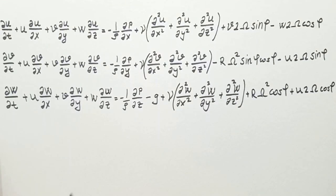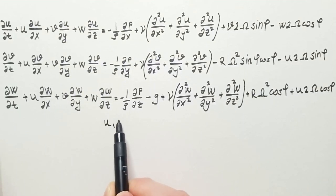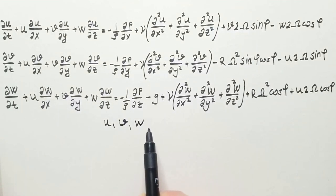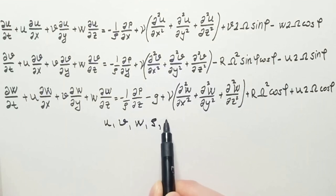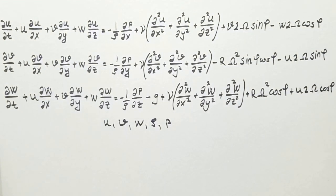Now if we count, we see that unknowns are u, v, w, rho, and p. We have five unknowns and three equations, which means that the system is incomplete. In order to close the system, we have to have additional equations, and they are usually equation of mass continuity, equation of state, and energy equation, usually first principle of thermodynamics. All these will be covered in this channel later, but for now, I just present you Navier-Stokes equations.